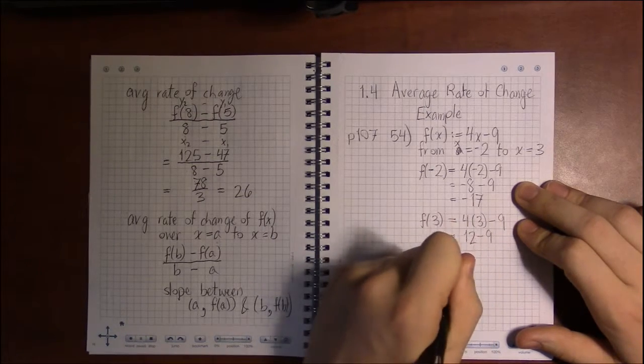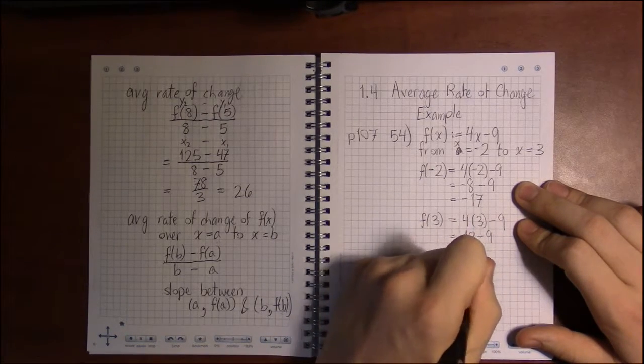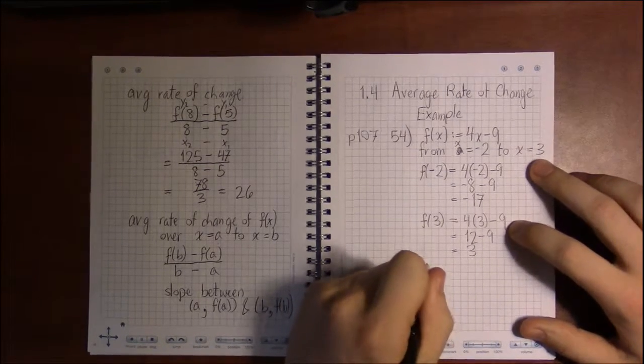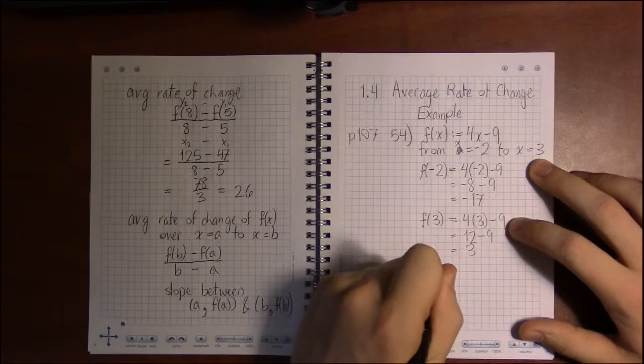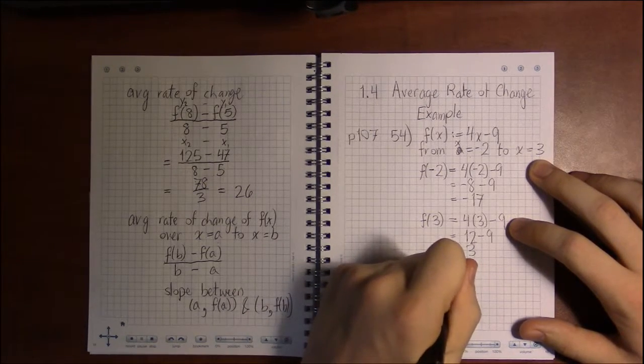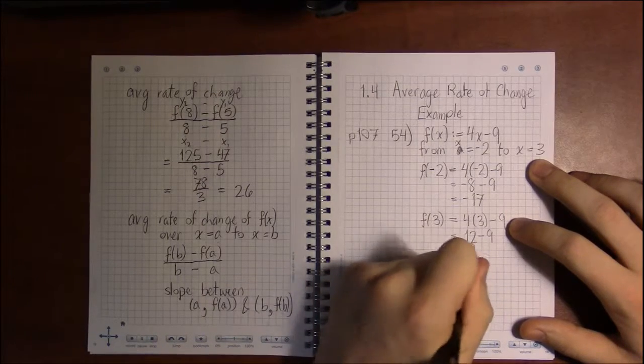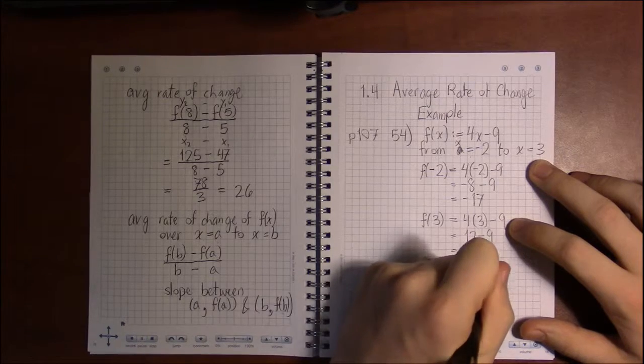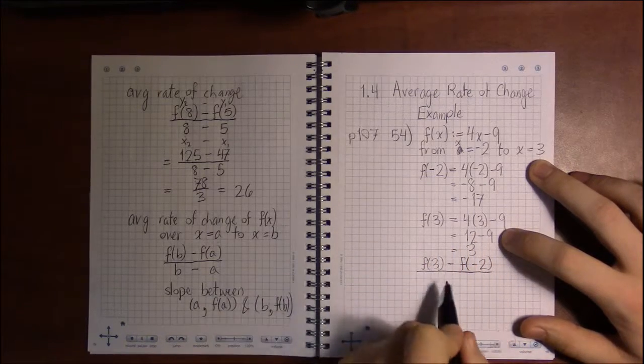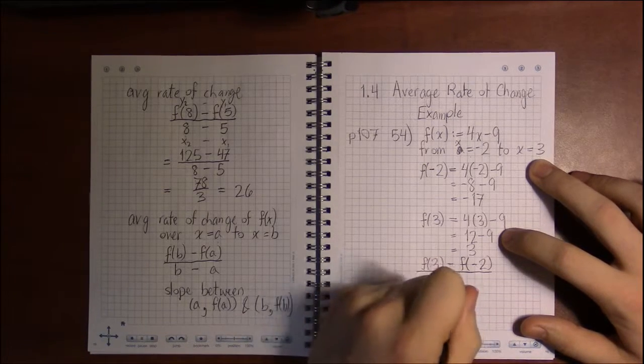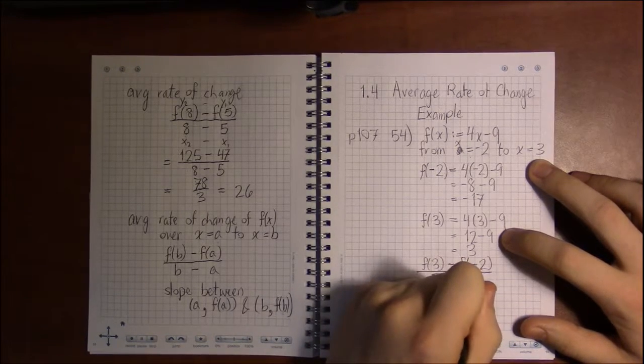So our average rate of change is f(3) minus f(-2), and then we divide that by the change in x's, the change from -2 to 3.